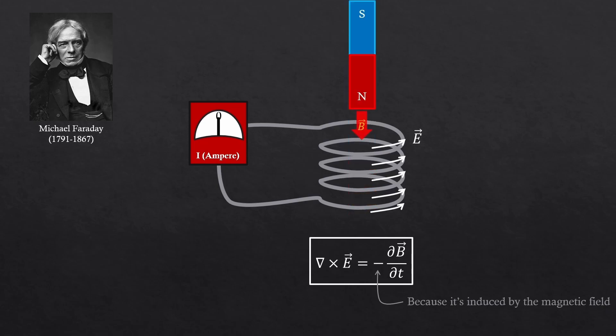What I mean is, it's not the electric field of the original magnetic field. It's a newly created electric field of the resisting magnetic field. Again, right-hand rule applies.